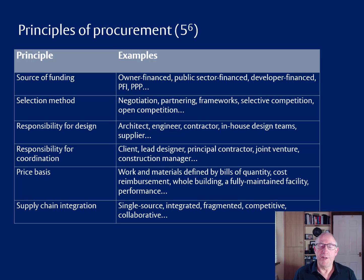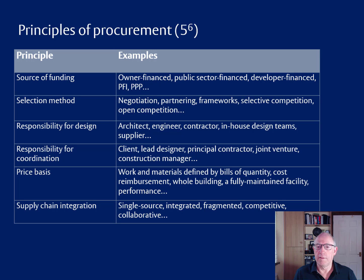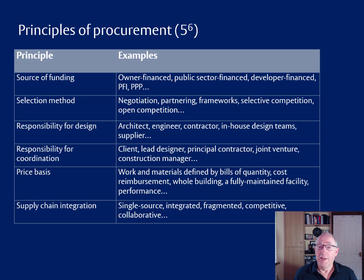The interesting thing about this table is that it gives us quite a large number of permutations. We need to answer each of these six questions shown as principles, and we have set out five options for each of the six. The number of permutations is five multiplied by five again and again — five to the power of six — which is 15,625 permutations.